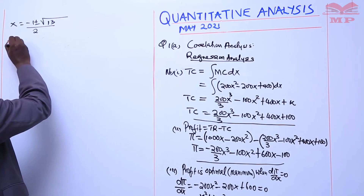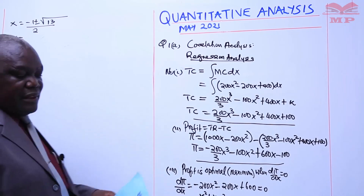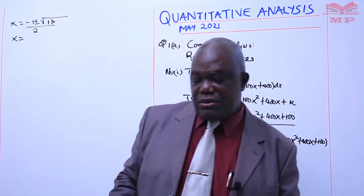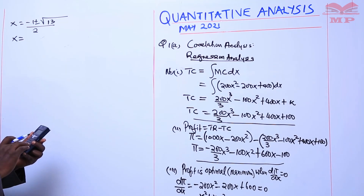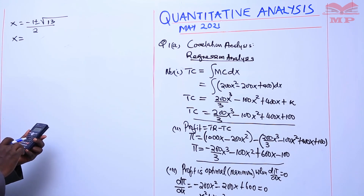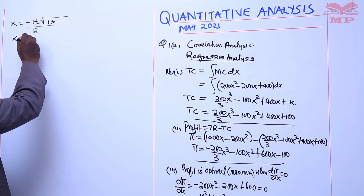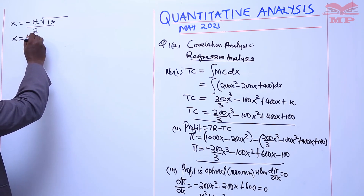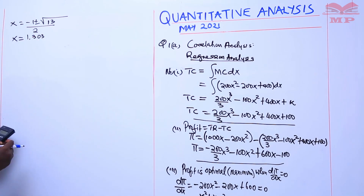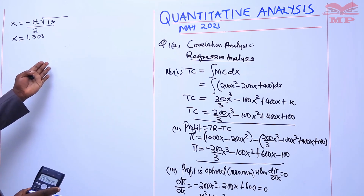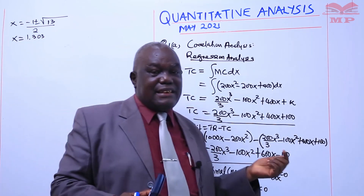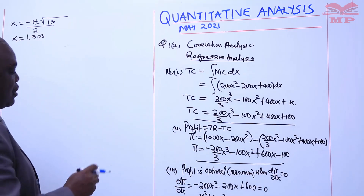The quantity has to be a positive value, so I take the positive root: negative 1 plus root of 13, then divide by 2. From the calculator that gives 1.3027, and I go to three decimal places because the units are in thousands, so I can get the optimal number. So the optimal output is approximately 1.303 thousand.